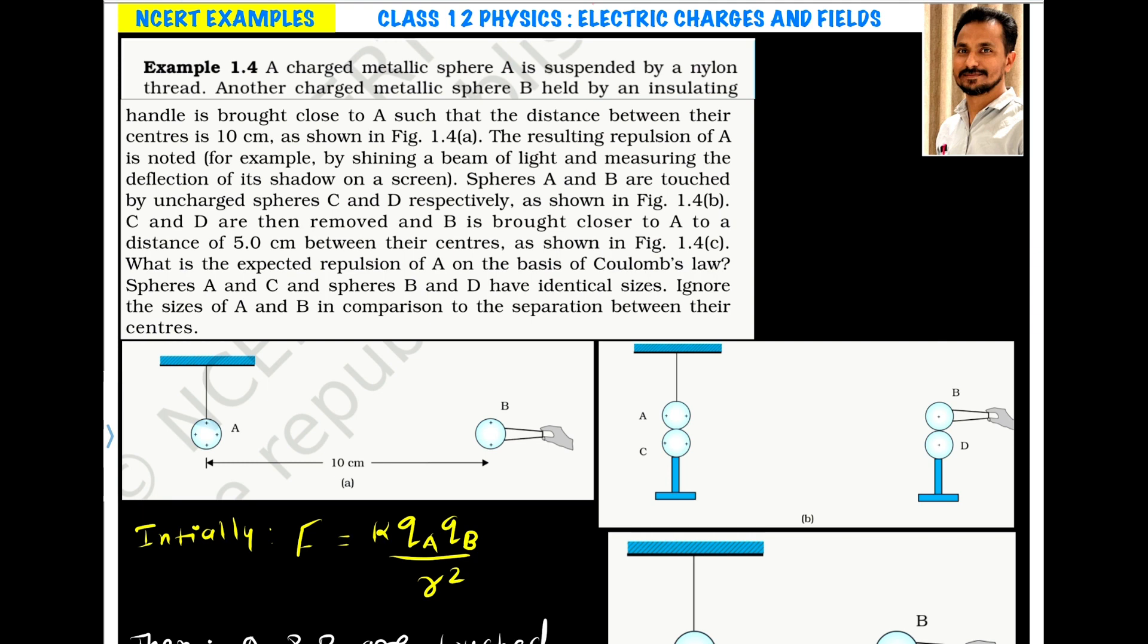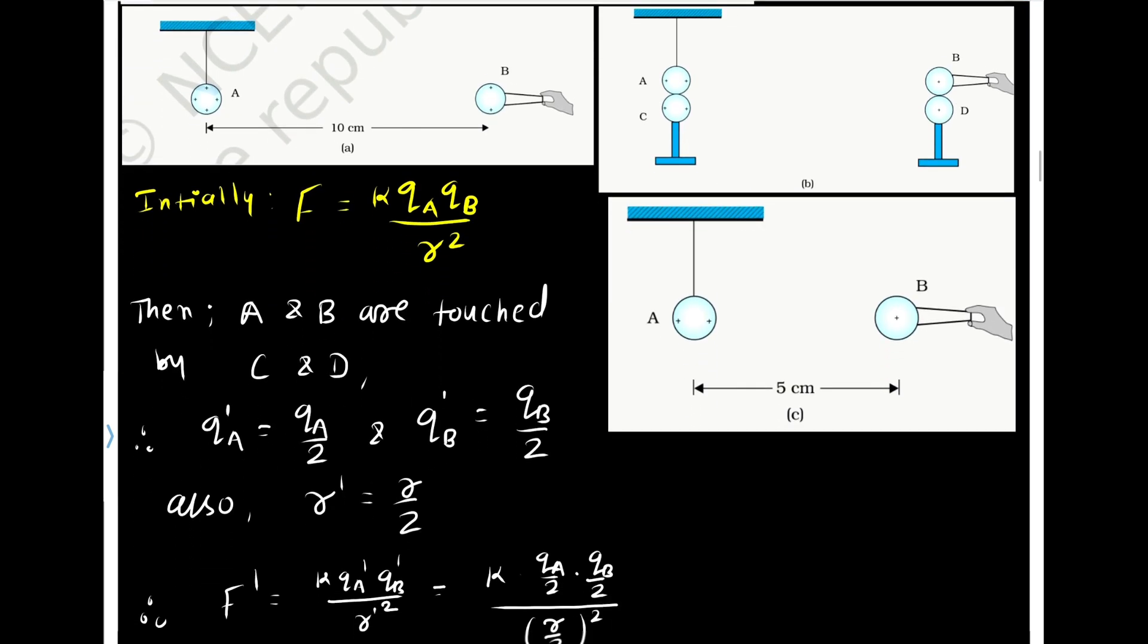As shown in the figure, C and D are then removed and B is brought closer to A at a distance of 5 centimeters. Now A and B are again placed facing each other at 5 centimeters instead of 10 centimeters. When A and B were touched by C and D, the new charge on A became QA by 2 and on B became QB by 2, and the separation changed from 10 to 5 centimeters, which is R by 2.